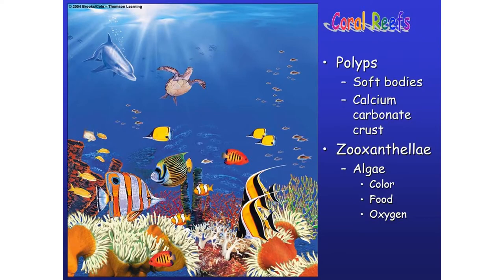The coral reef has a polyp — that is the cnidarian group of polyp and medusa. Polyps are very soft-bodied calcium carbonate bodies, and they are associated with zooxanthellae algae. This algae gives the beautiful coloration of the coral reef ecosystem. The coral reef is basically built in very crystal clear water and shallow depth of the ocean, because sunlight is very essential for the growth of the coral reef and this algae. In turbid water, coral reef does not grow well. Oxygen is also very high in this coral reef ecosystem.